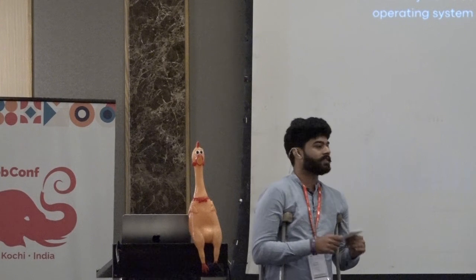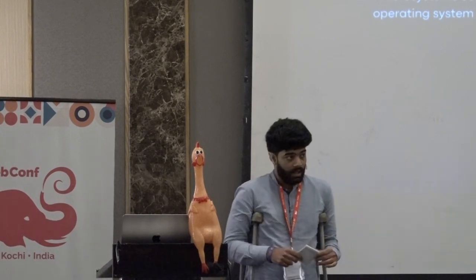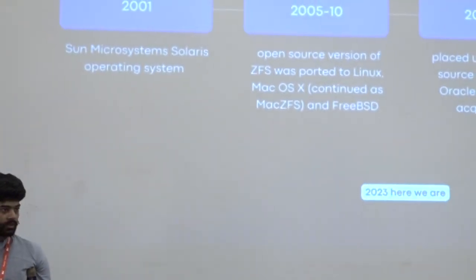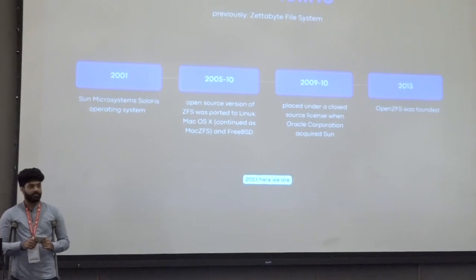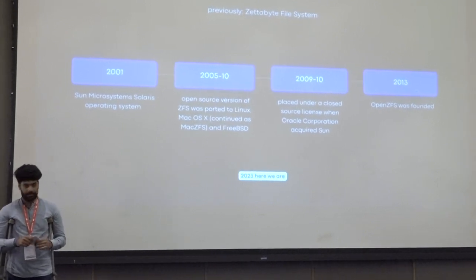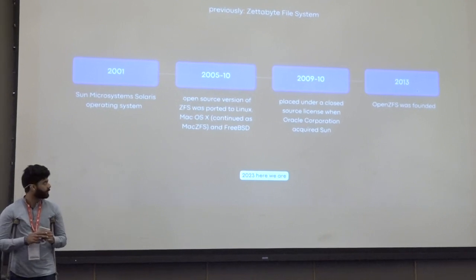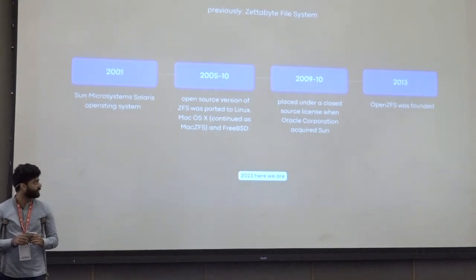Talking about ZFS — what is it actually? It is formerly known as the Zettabyte File System. In 2001, Sun Microsystems created it for Solaris. Then from 2005 to 2010, they open-sourced ZFS under OpenSolaris, and so many forks came for Linux, Mac, and FreeBSD. Unfortunately, after about five years, it got closed source when Oracle bought Sun. But people kept working on forks and derivatives. In 2013, OpenZFS was officially announced as an open standard for ZFS. And ten years later, here we are in 2023 with a stable ZFS on Linux and many other platforms.